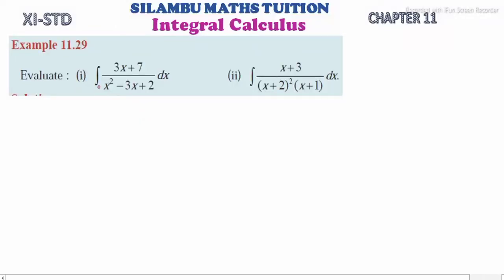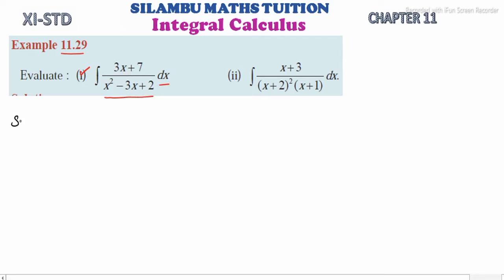Hi student, this is Selimba Max Division 11th Standard Example 11.29 Subdivision 1: Integrating (3x + 7) divided by (x² - 3x + 2) dx. Given: integrating (3x + 7) divided by (x² - 3x + 2) dx.